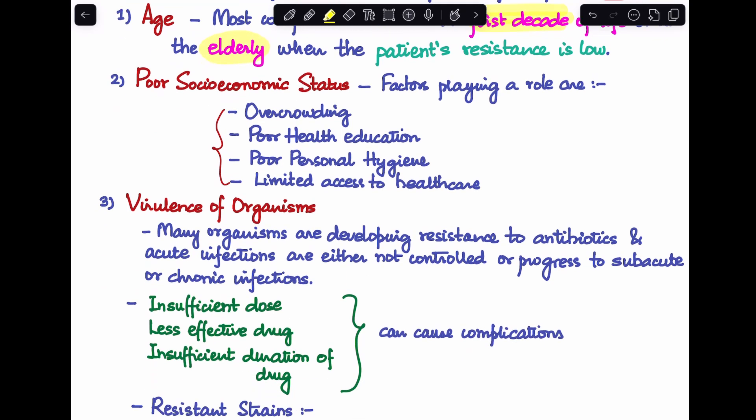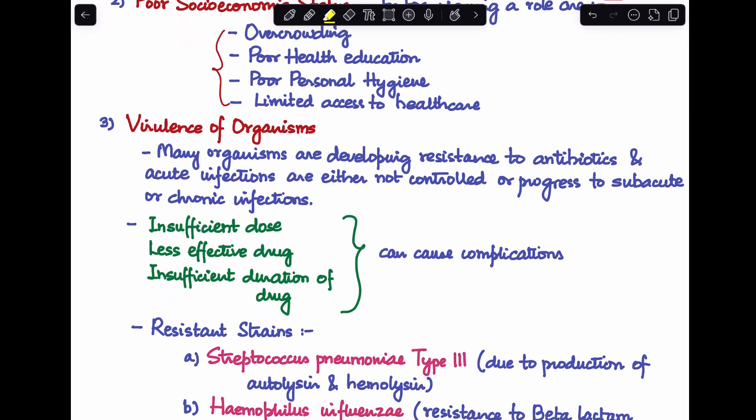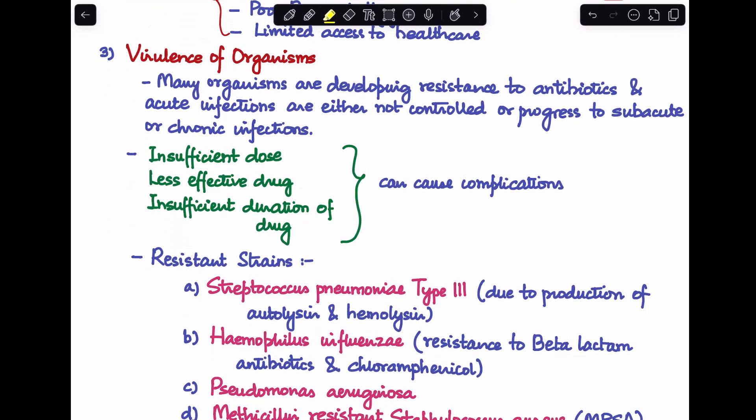All of these factors combined end up causing more risk towards developing complications. Third factor here is the virulence of the microorganism that has affected in the case of CSOM. Now many organisms nowadays have been seen to be developing resistance to antibiotics, so acute infections end up either not getting controlled or they end up progressing to subacute or chronic infections.